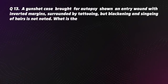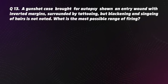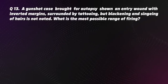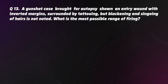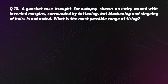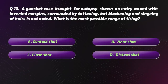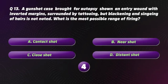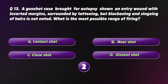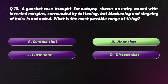Question 13. A gunshot case at autopsy showed an entry wound with inverted margins surrounded by tattooing, but blackening and singeing of hairs was not noted. The most possible range of firing is B — Near shot.